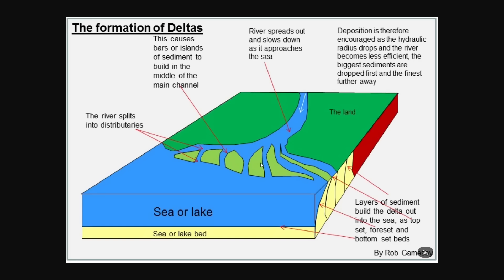It is very uncommon for a river to split other than in the case of deltas, and these rivers can keep depositing and depositing sediment until they become massive. So today we are going to be investigating some massive arctic river deltas and how they came to be.